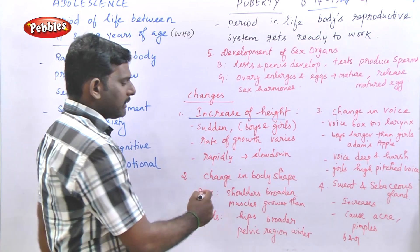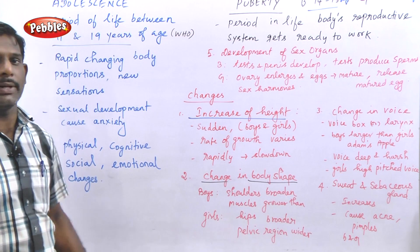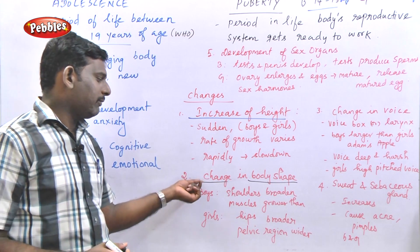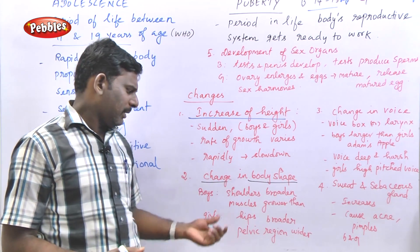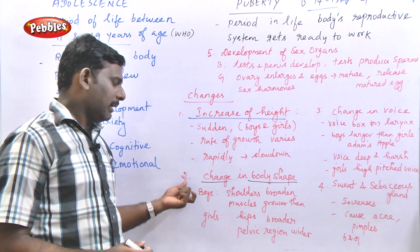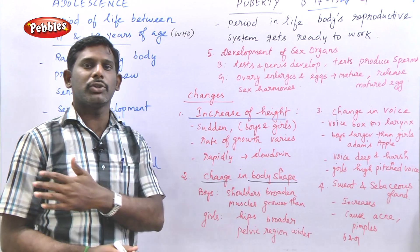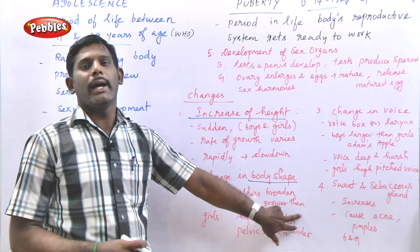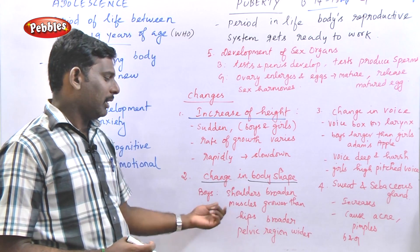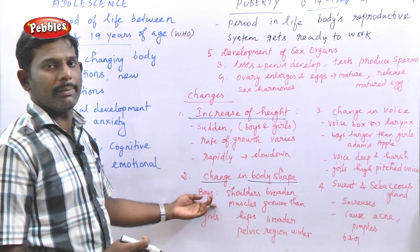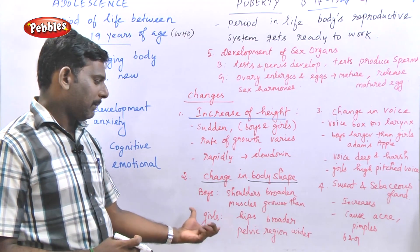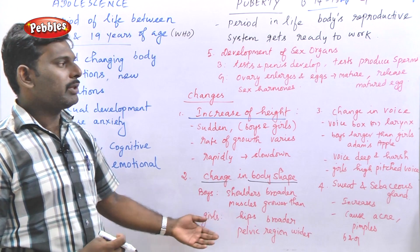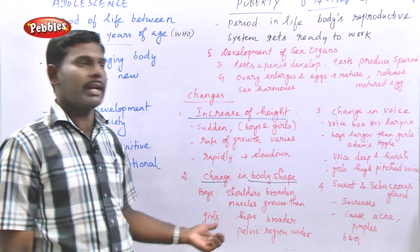The second change is a change in body shape. We can identify when a boy or a girl reaches the puberty period. For boys, shoulders are broadened and muscles are growing with fast growth development. For girls, the hips are broader and the pelvic region is wider — the bones get broader and the pelvic region is widened. These are the types of changes we can identify in body shape.